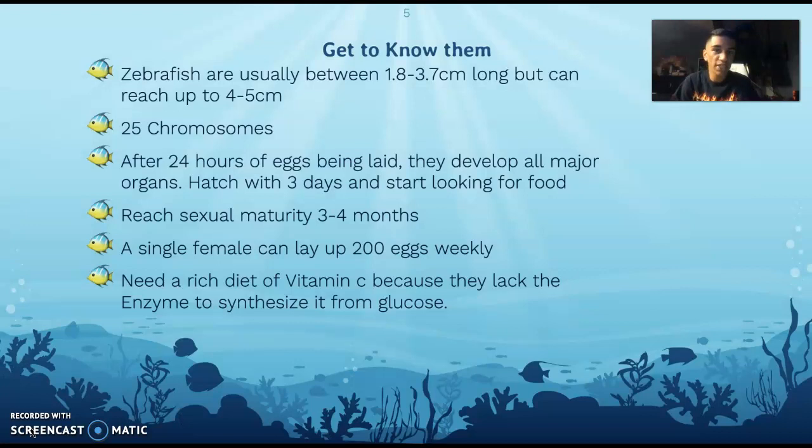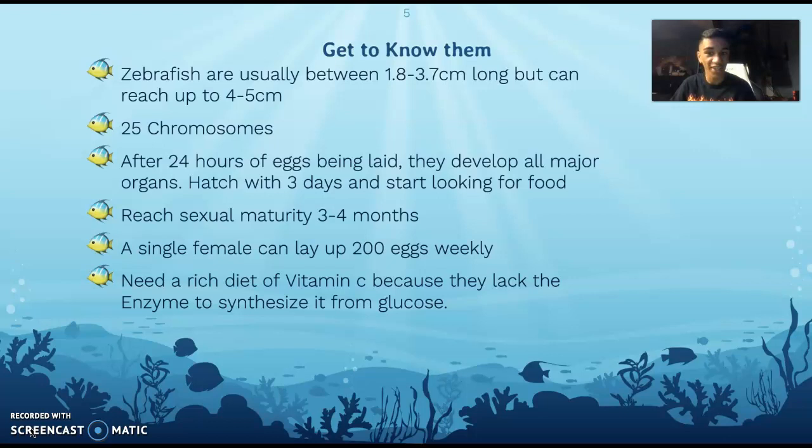So get to know the zebrafish. Zebrafish are usually between 1.8 and 3.7 centimeters long, but can reach up to 4 to 5 centimeters. They have 25 chromosomes, and after 24 hours of the eggs being laid, they develop all of their organs and hatch in 3 days and start looking for food. That's probably why scientists use them — they reproduce very quickly.